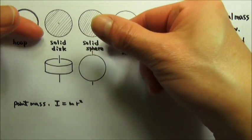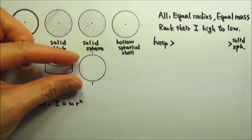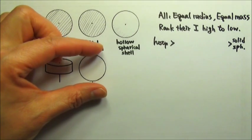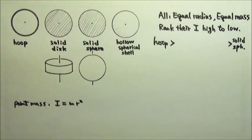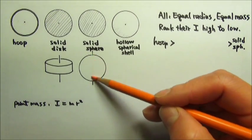If we turn the picture this way to compare the solid disk to the solid sphere, we can see that the solid disk has the same thickness throughout, while the solid sphere is thicker in the center, which means it has a larger fraction of mass close to the axis.